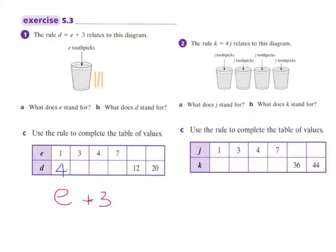Then I go back and look at this one: when E equals 3. So there's my E — E equals 3. I put 3 in there, so it becomes 3 plus 3. What's 3 plus 3? I think everyone can work that out — 6. So what that's telling me is no matter what value I have here, I can work out what D is.